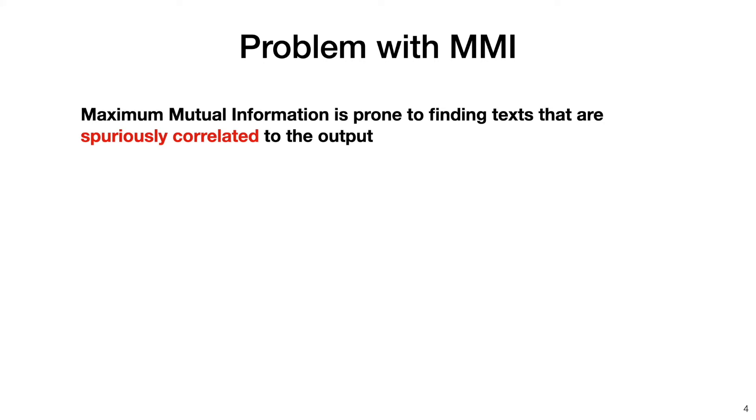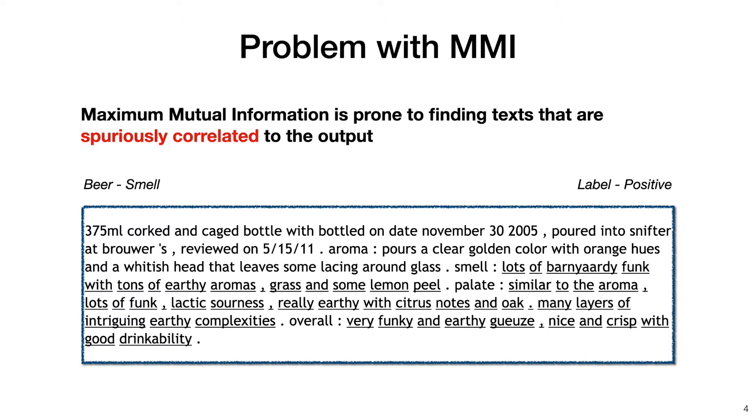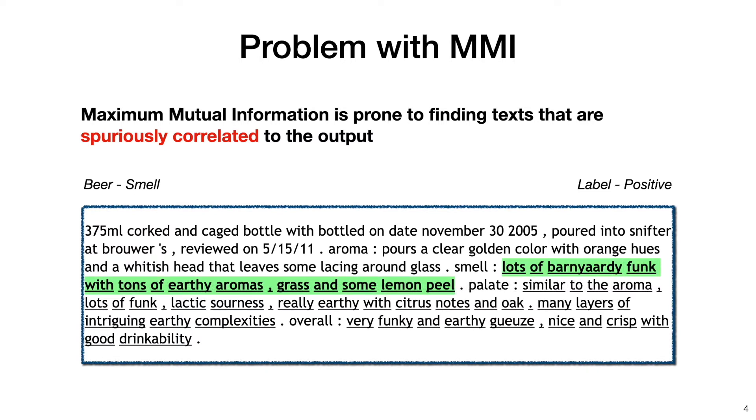Going back to the beer review example, here is another piece of beer review, and suppose now the goal is to find the rationales for the score of smell or aroma, which is a positive score. There are in fact multiple sentences that are strongly correlated with the smell score. The first sentence is of course the review on the smell aspect, because it truly explains why the smell score is positive.